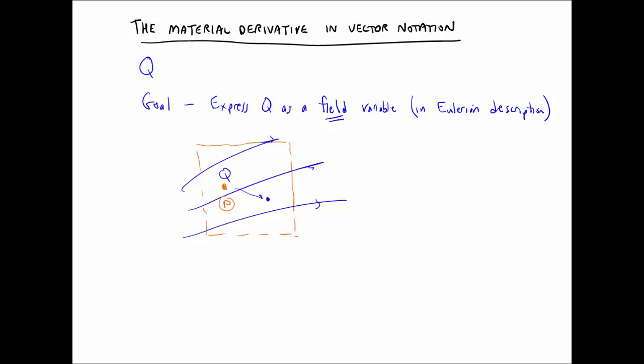So here's how we write Q. Q is a function of space x, y, z in the Cartesian coordinate system and time, like that. Or we can write Q as a function of x vector and time, where x vector is equal to x, y, z, in the usual sense.